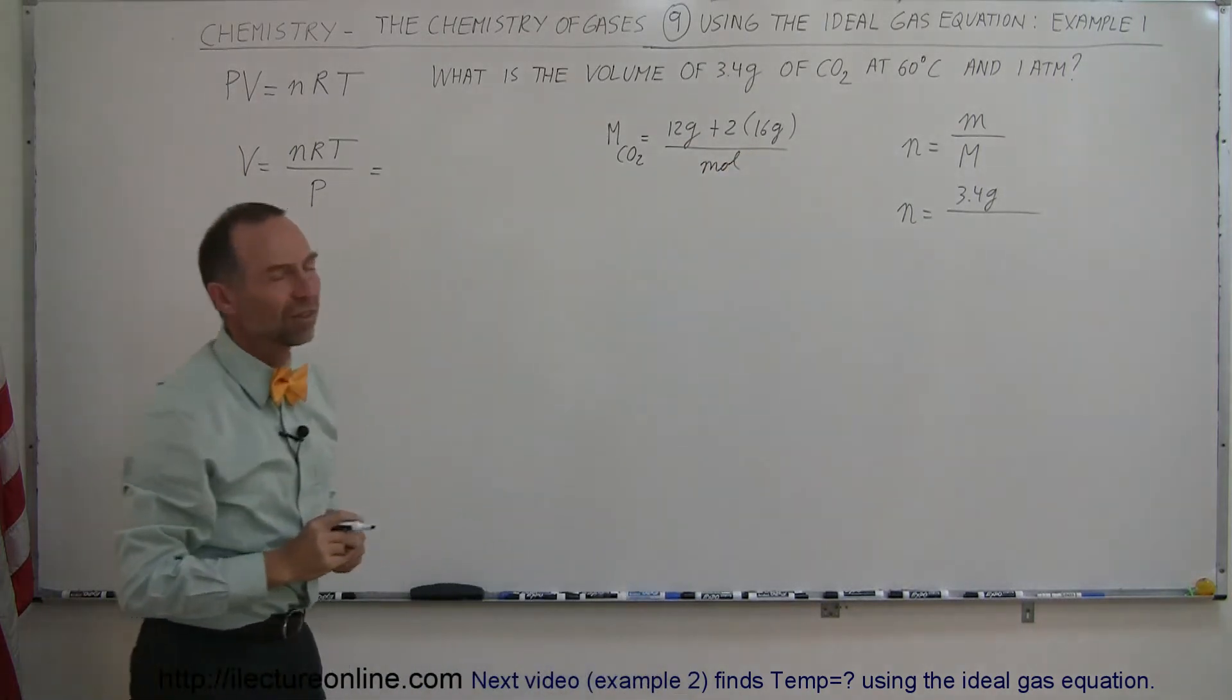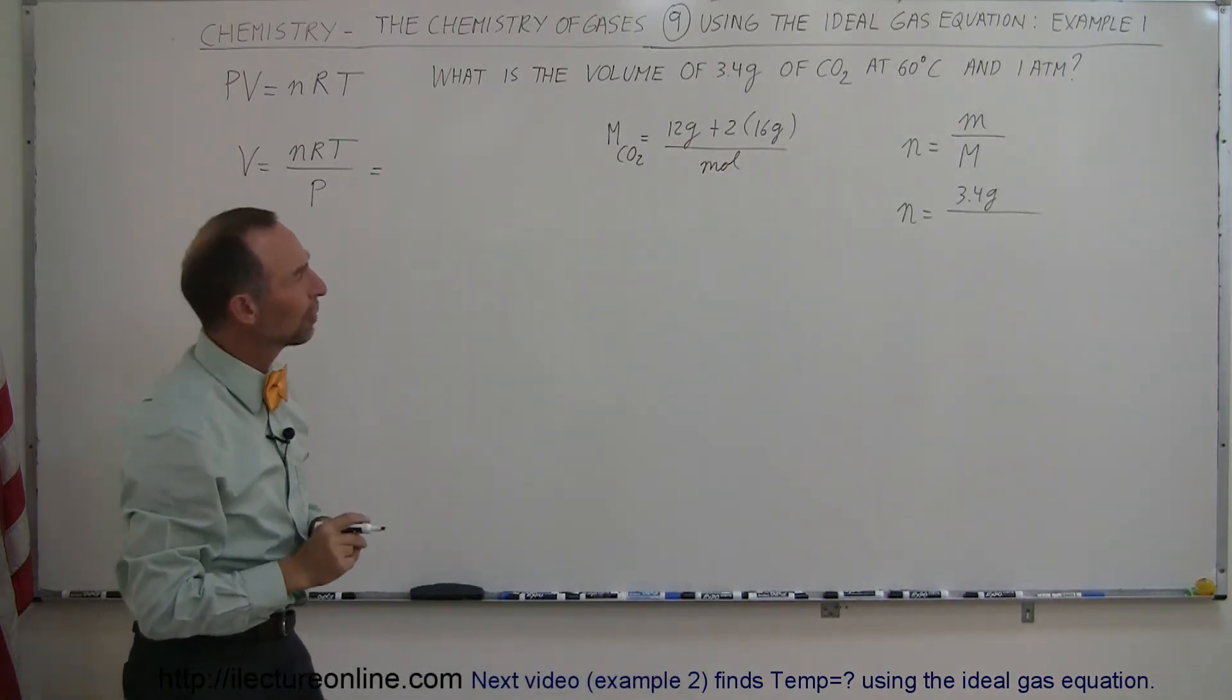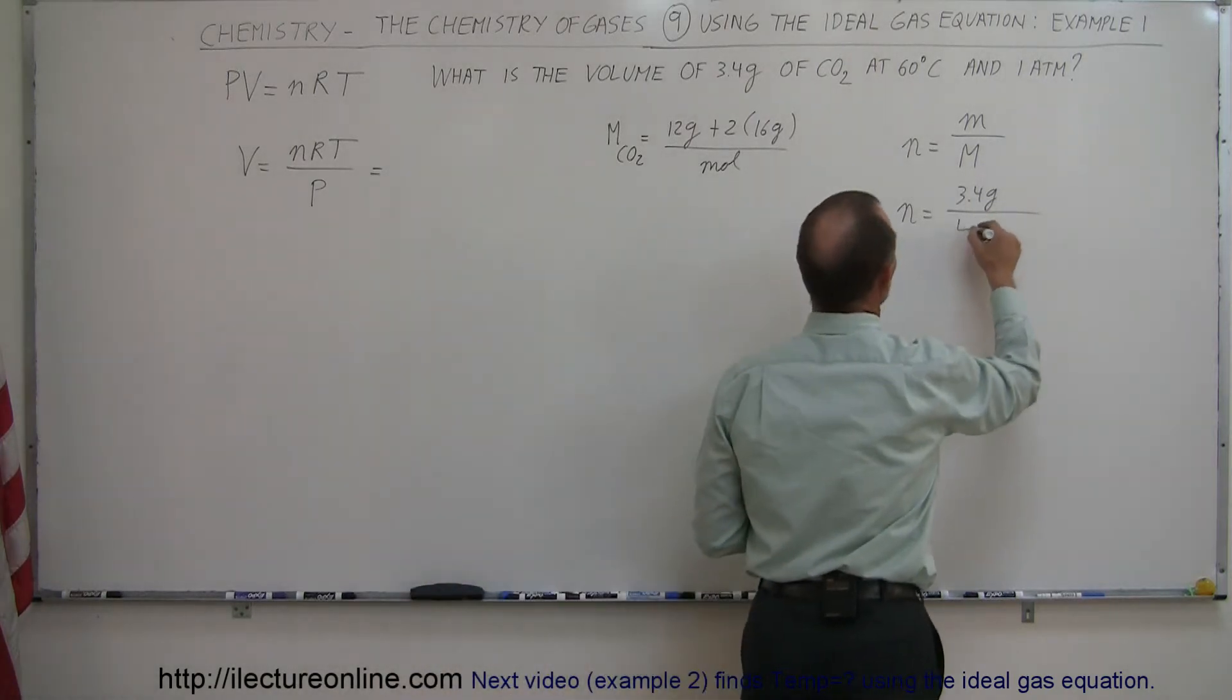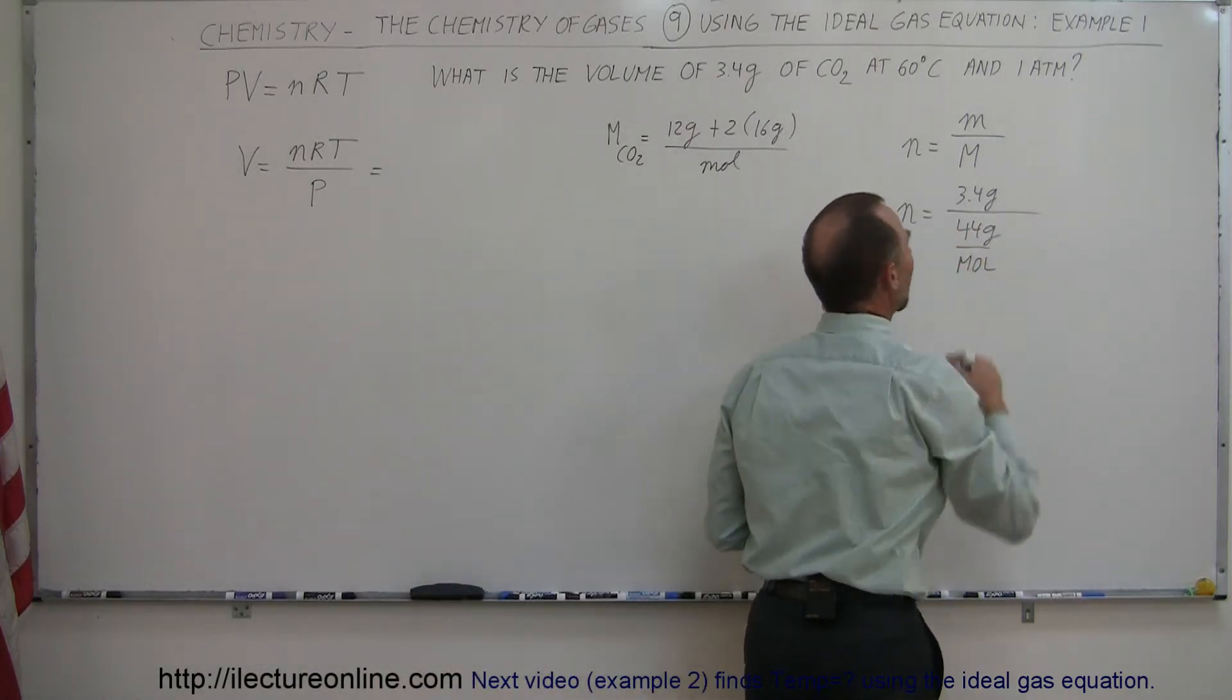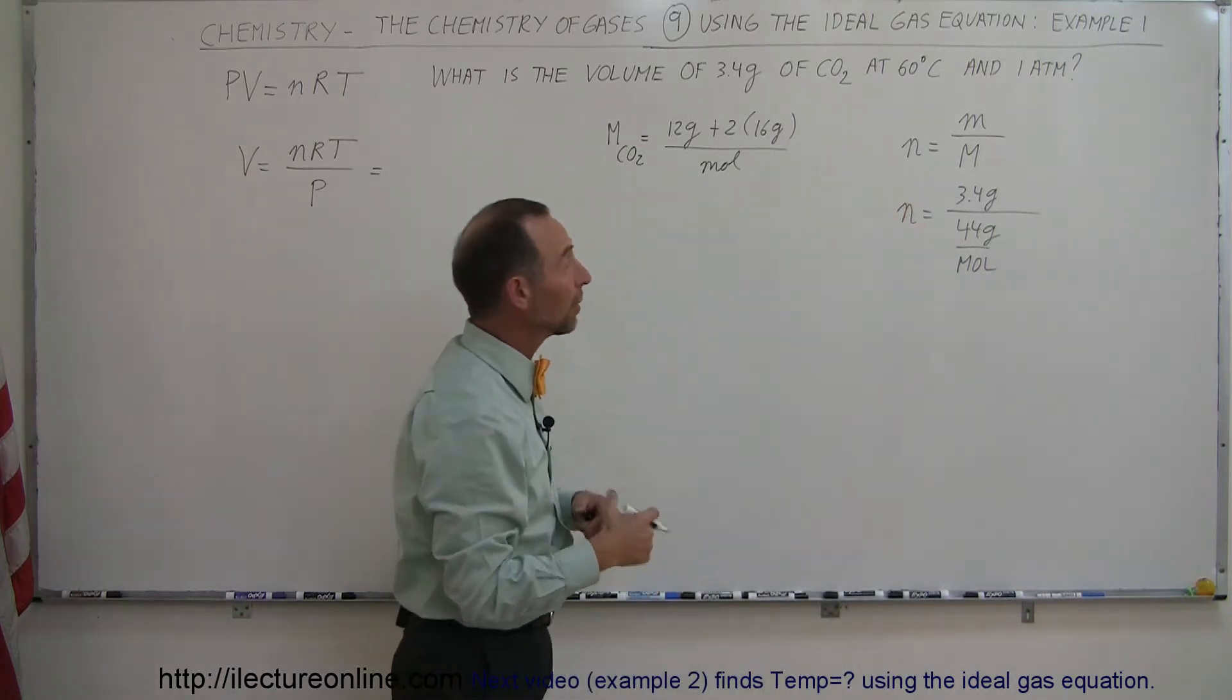Alright, 2 times 16 is 32, plus 12 is 44, so it would be 44 grams per mole, and then you can see that grams cancel out, and 1 over mole in the denominator becomes moles.